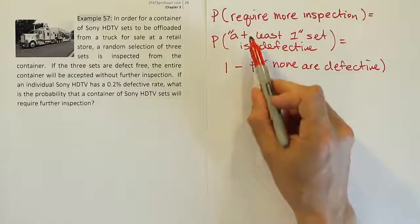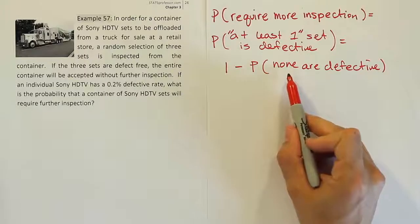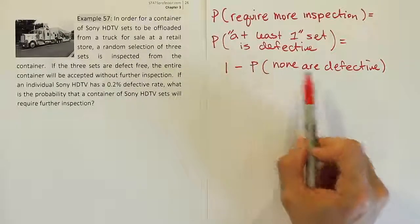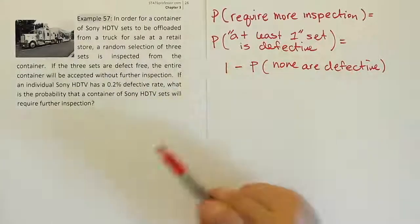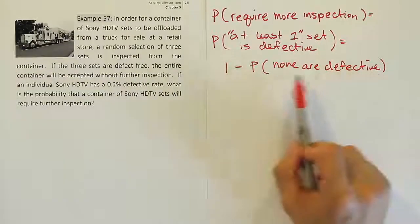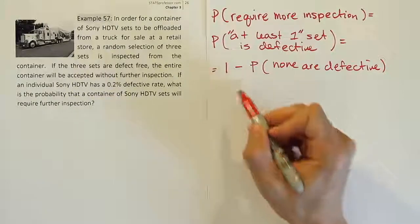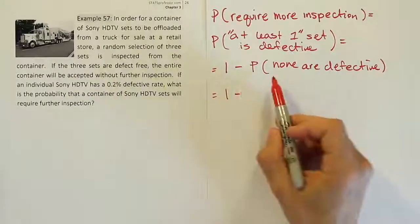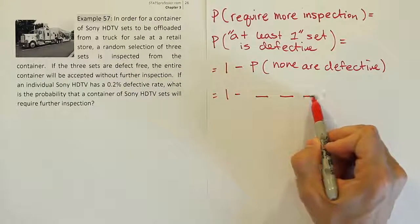When we're working with this 'at least one' statement, whatever we add to the end of it, we add to the end of the word 'none'. So grammatically, I changed 'is' to 'are', but otherwise I put the same thing. None of the sets are defective. So if we can find this probability, then we can answer the problem. And you'll see that there's no longer ambiguity here. We know exactly how this happens. There are three sets selected, so I should have three spaces.